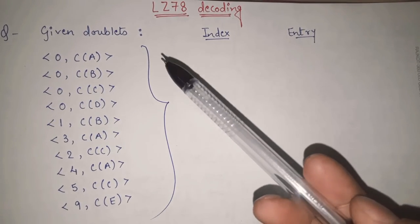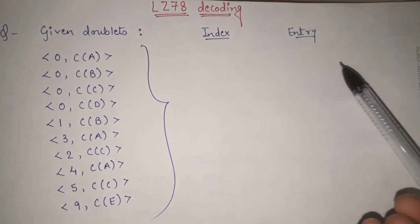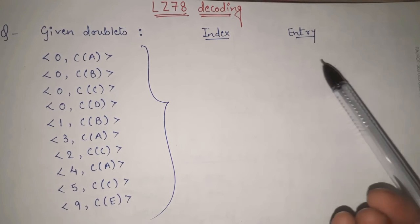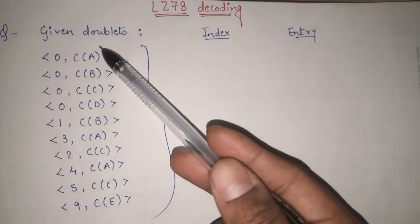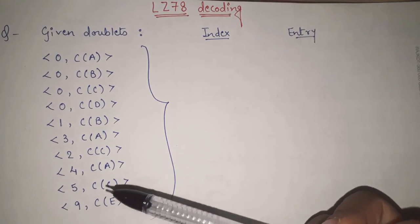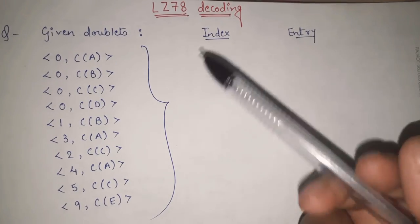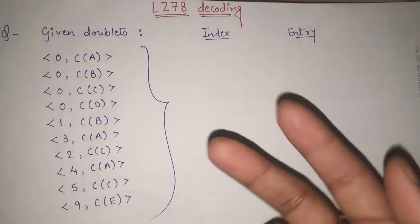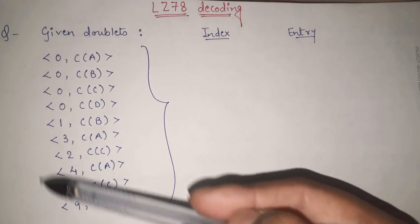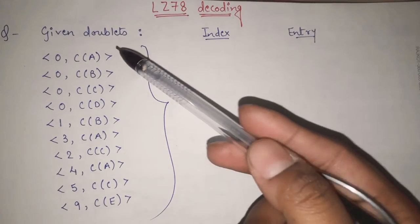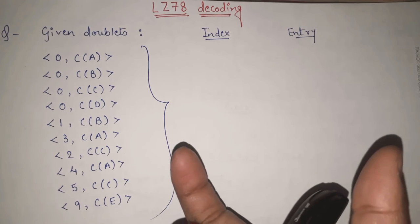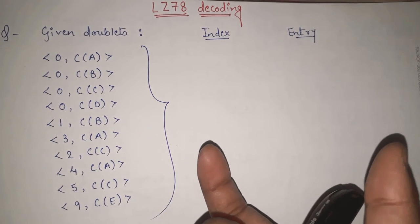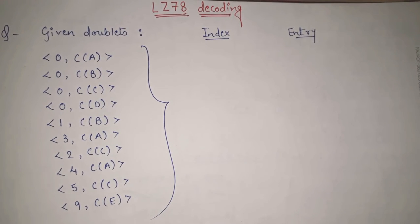In encoding, what we have seen? In encoding we were given the whole message and by applying the procedure on it we used to get the doublets as our output. So obviously in decoding it is opposite. In decoding we are given these doublets and we have to decode them in such a way that at the end we will get the whole message as output. It is very simple.